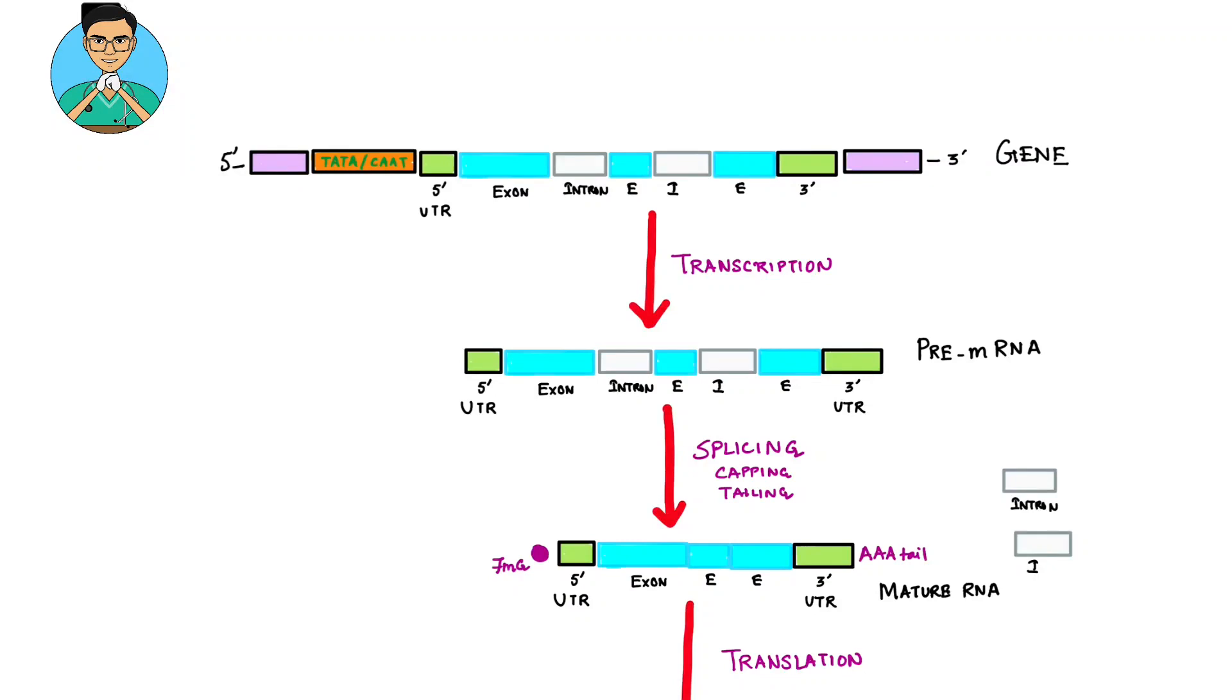In this USMLE high yield video, we will talk about three important terms related to gene regulation: promoter, enhancer, and silencer. We have already learned the functional organization of a eukaryotic gene.